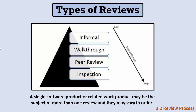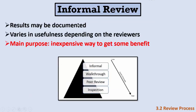There are four major types of reviews, ranging from most informal to most formal. The first is the informal review. Results may or may not be documented, and its usefulness depends on the reviewers. Its main purpose is to get some benefit inexpensively — it doesn't consume significant resources, time, effort, or money.